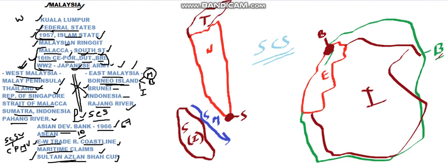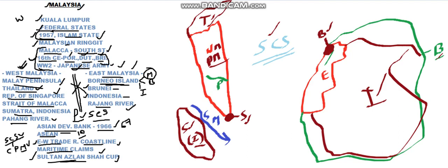Eastern Malaysia has got two bordering countries: Brunei and Indonesia. Western Malaysia, also called Peninsular Malaysia, has borders with Thailand, Singapore, and the Indonesian island of Sumatra divided by the Strait of Malacca. In between east and west Malaysia there is the South China Sea. Now mapping the two important rivers: the Pahang River in western Malaysia and the Rajang River in eastern Malaysia.